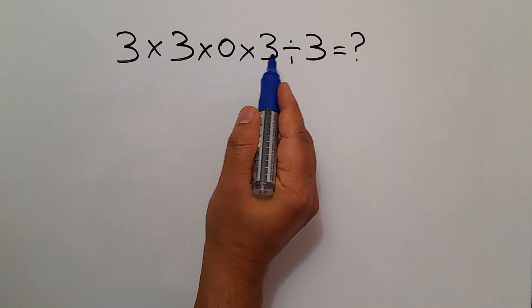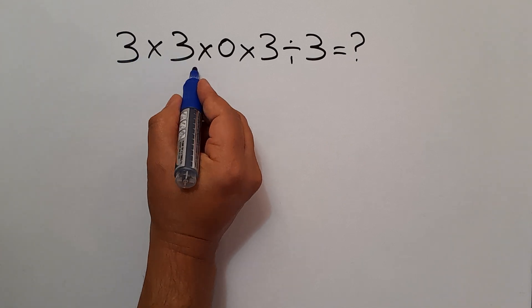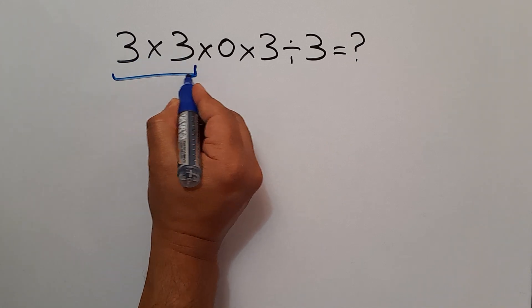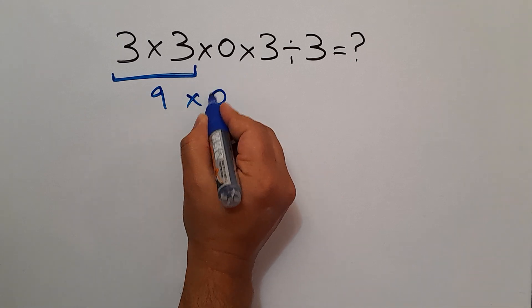So first, this multiplication: 3 times 3 gives us 9. So 9 times 0 times 3 divided by 3.